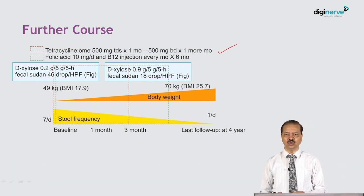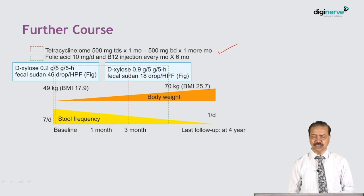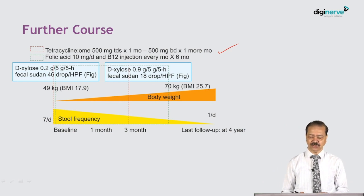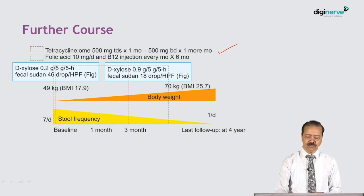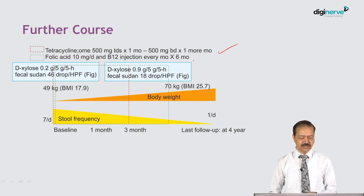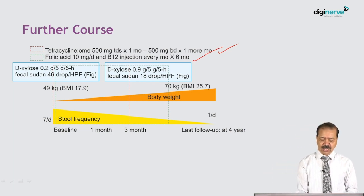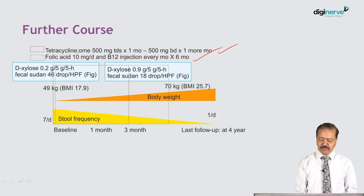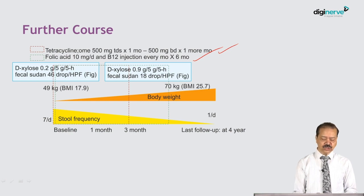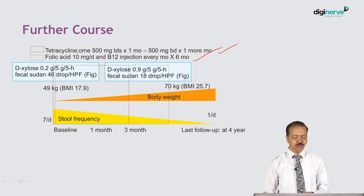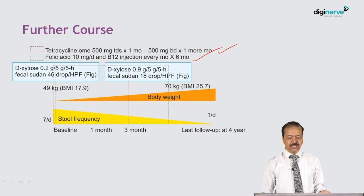We treated him with tetracycline 500 mg three times daily for one month, then 500 mg twice daily for another month, along with folic acid. His body weight went up from 49 kg to 70 kg, and stool frequency went down from seven per day to one per day.